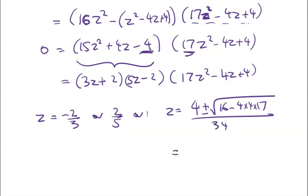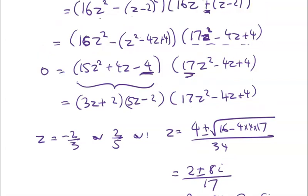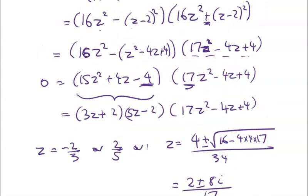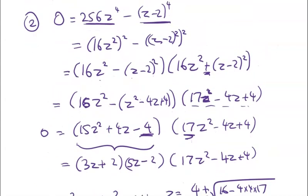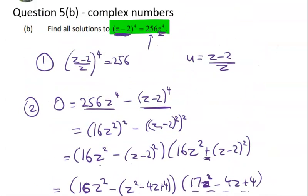That all cleans up to give me 2 plus or minus 8i on 17. So I get 2/17 plus 8i/17 or 2/17 minus 8i/17. So they're my four solutions. But I mean the purpose of doing these questions is not so much getting those solutions as thinking about all of the different ways we've got for attacking hard equation problems. So there you go. That's doing difference of two squares.